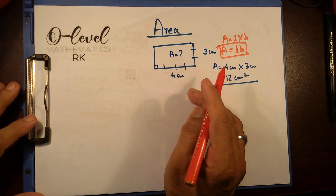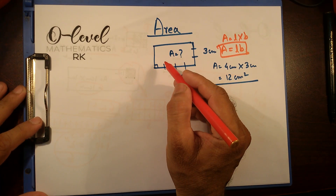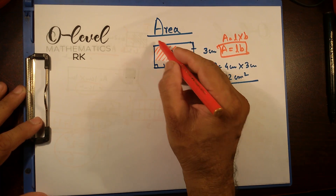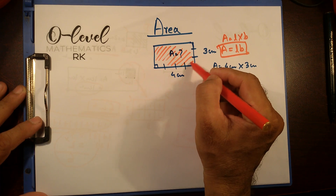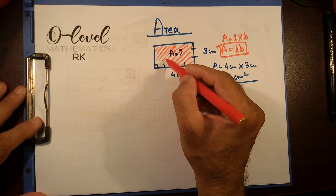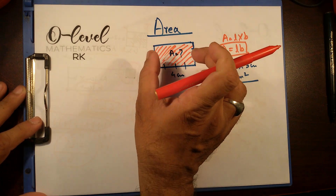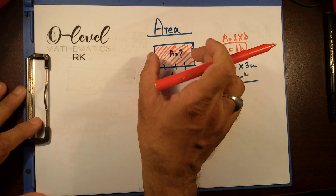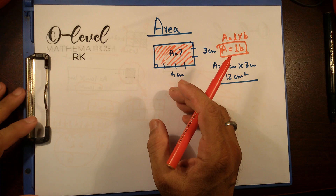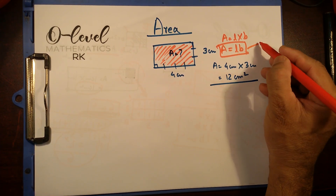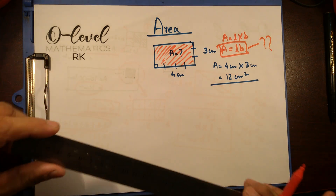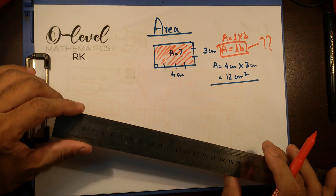By definition, area of a region is the space this shape occupies — this shaded space occupied by this rectangular shape. This space belongs to this shape, and this is the area of this shape. How are we going to measure this area? We know length into breadth, but where does this formula come from? We want to go back to the unit measurement of linear distance.